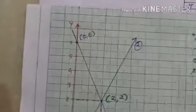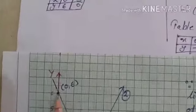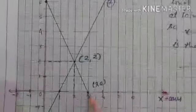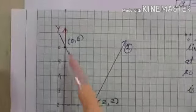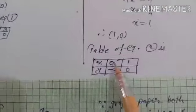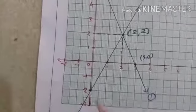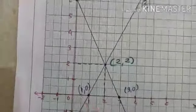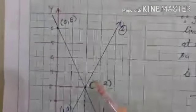Now plotting on graph paper with x-axis and y-axis. For equation 1: plot (0, 6) at x equal to 0 and y equal to 6, and plot (3, 0) on the x-axis. Join these two points with a ruler — this is equation number 1. For equation 2: plot (0, minus 2) and (1, 0), then join these two points — this is equation number 2.